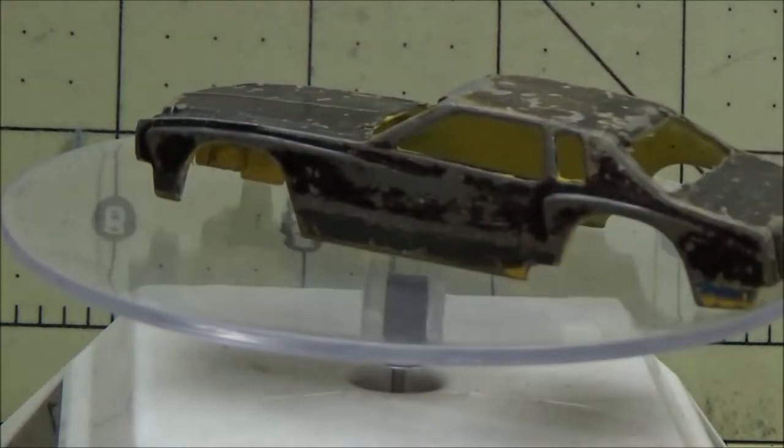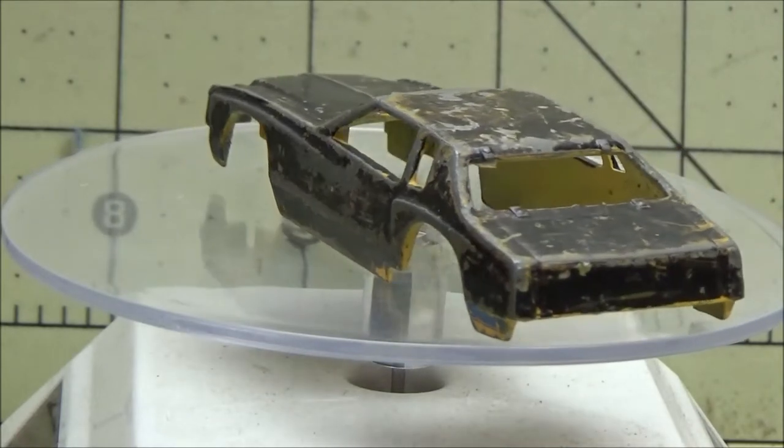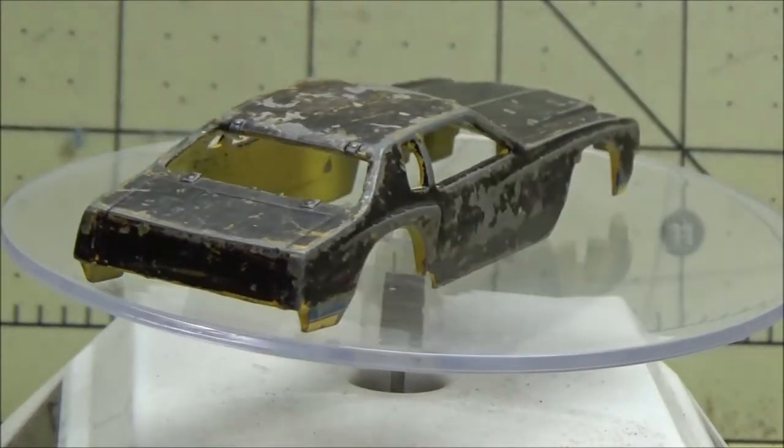So let's get started. Drop this bad boy in the citrus strip. Drop the base in the super clean. And polish the windshield.